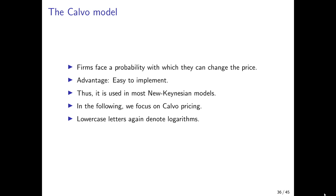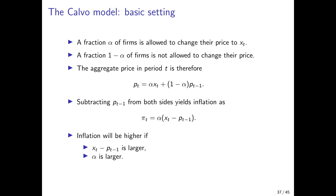Again, lowercase letters denote logarithms. The basic setting in the Calvo model is that a fraction alpha of firms is allowed to change their price in period t, and the choice variable is denoted by x_t — that's the price they charge in period t if they are allowed to change it. A fraction 1 minus alpha of firms is not allowed to change their price; they are stuck with a price set at some point in the past. The aggregate price level in period t is therefore a weighted average of the newly chosen optimal price x_t, with weight alpha, and the unchanged price p_{t-1}, with weight 1 minus alpha.